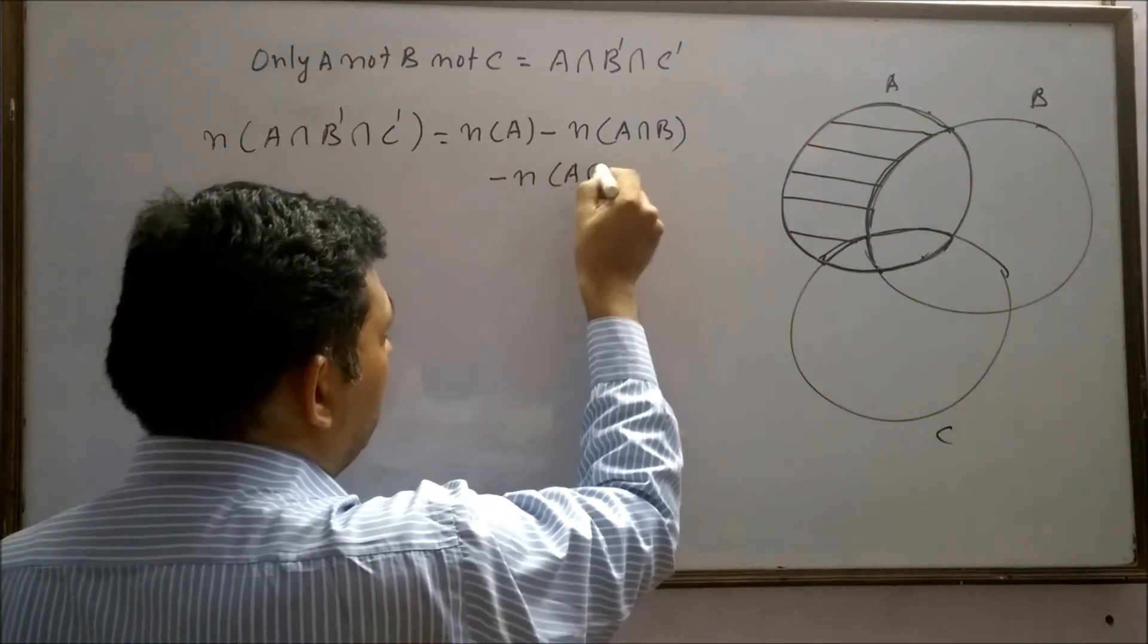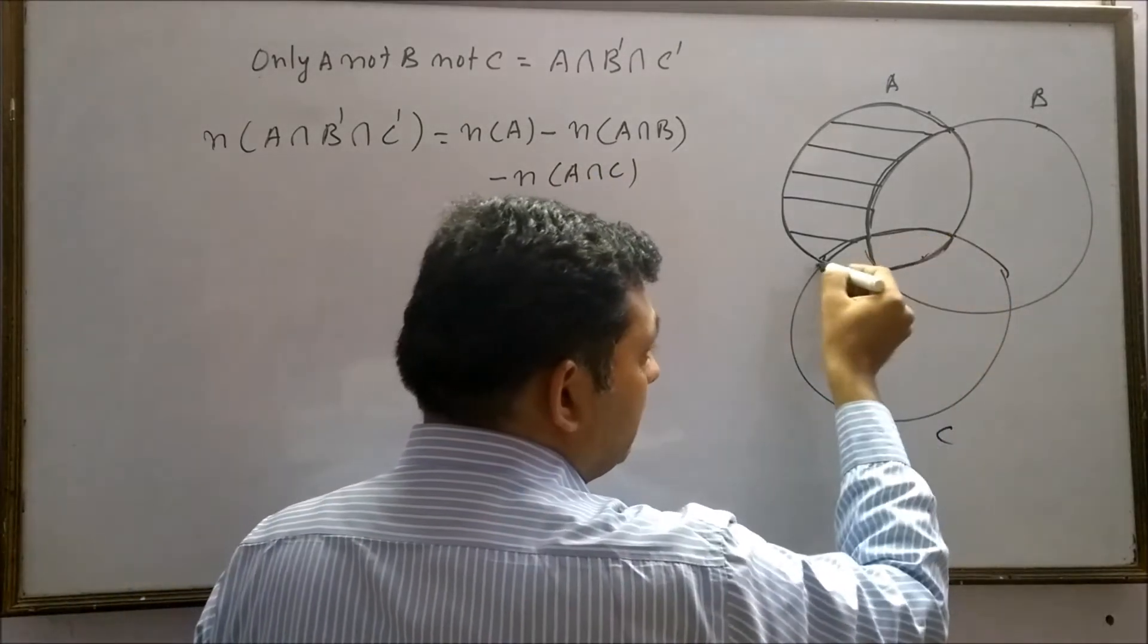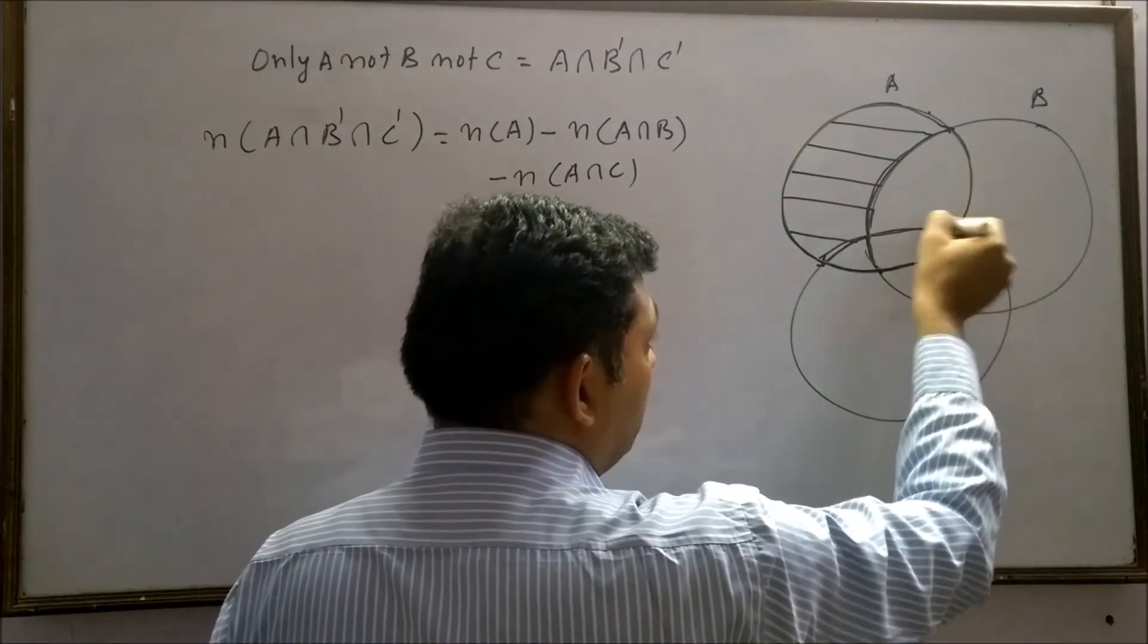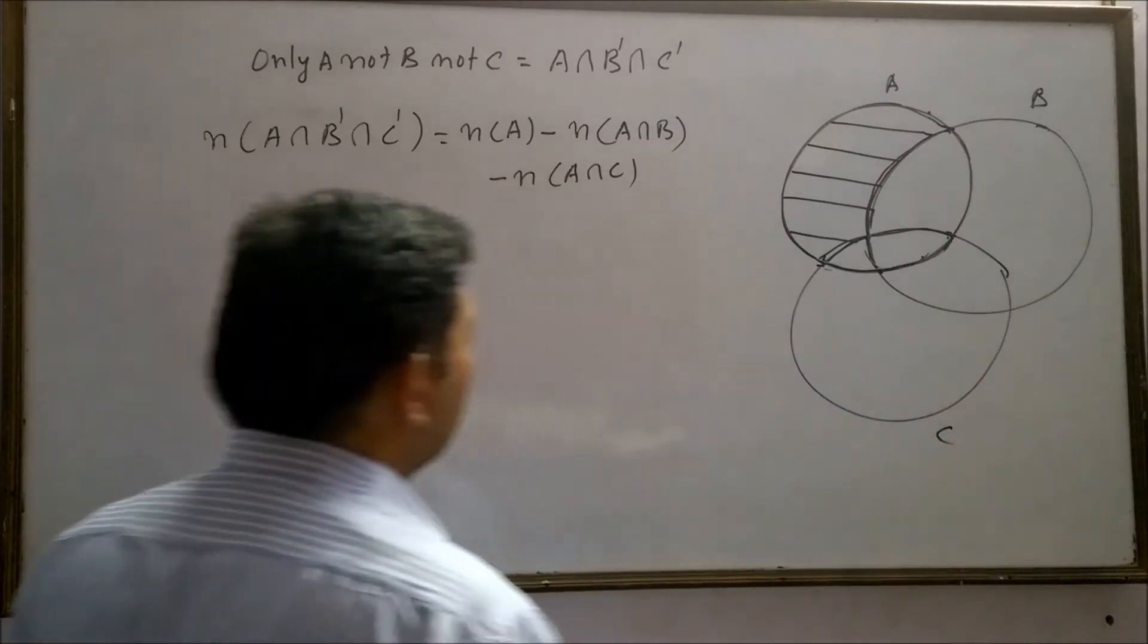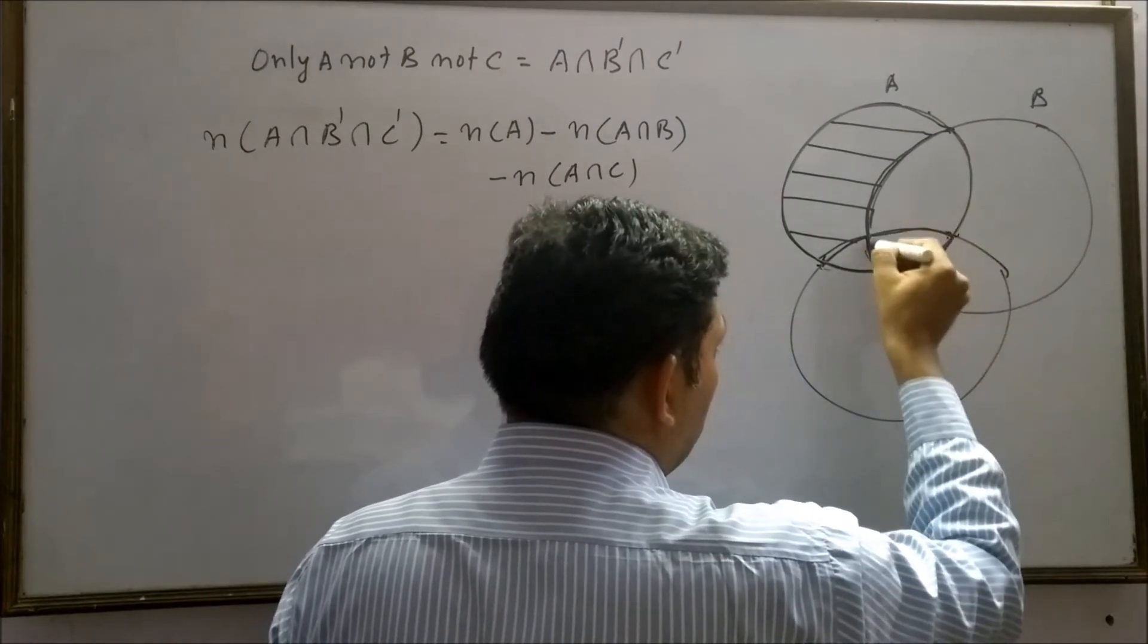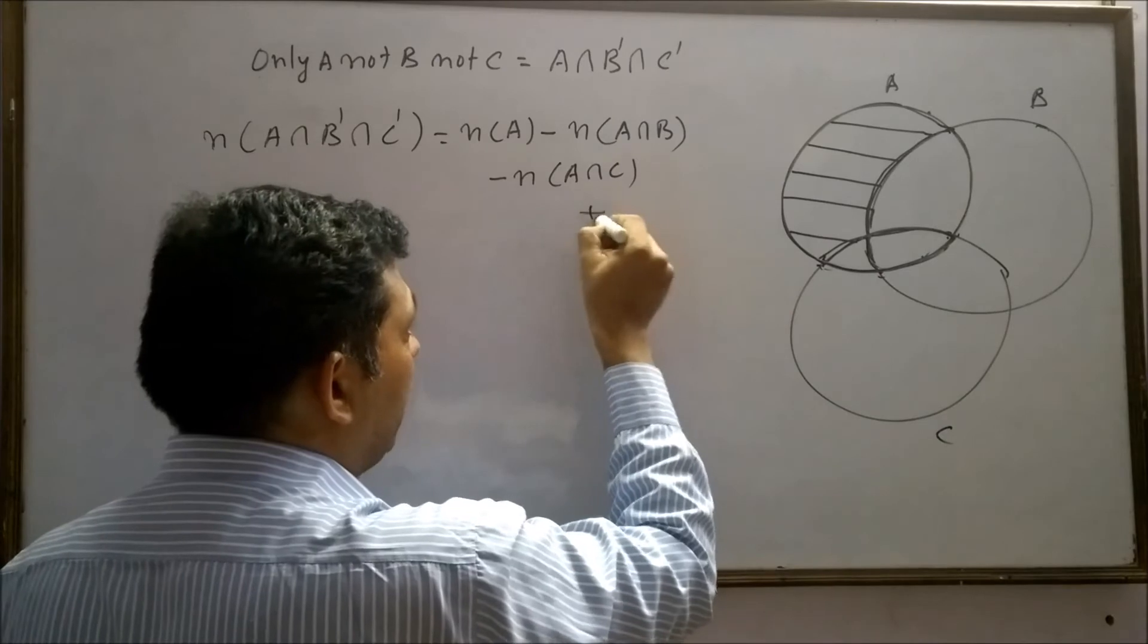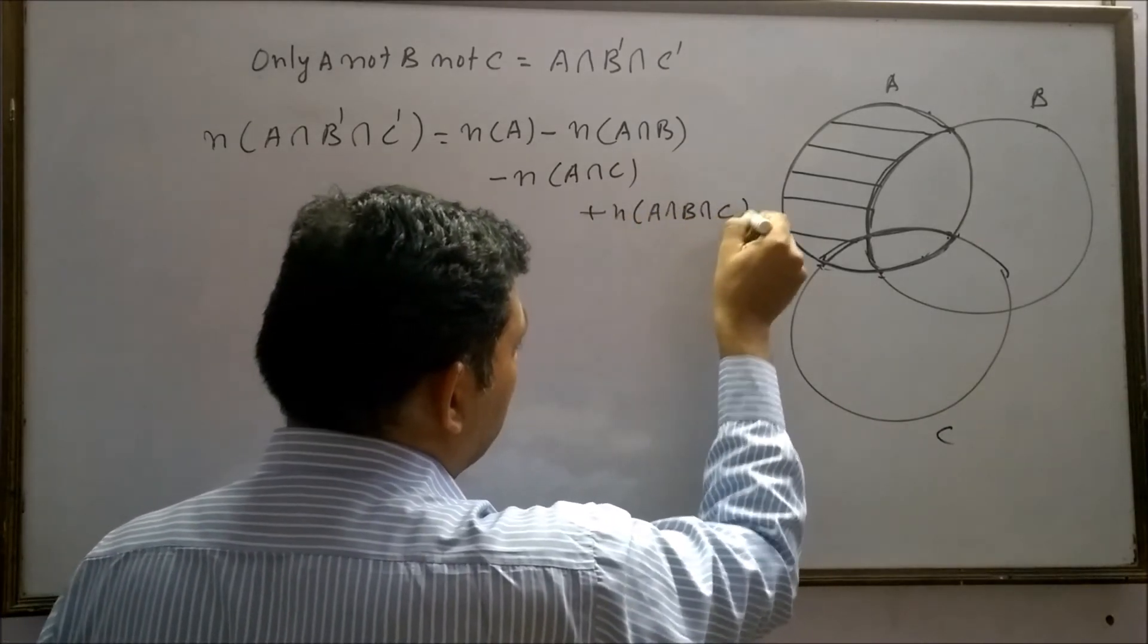Minus A intersection C. A intersection C is this part. So we have to remove A intersection C from the set A. By removing these two sets, this part has been removed two times. So we have to add A intersection B intersection C.